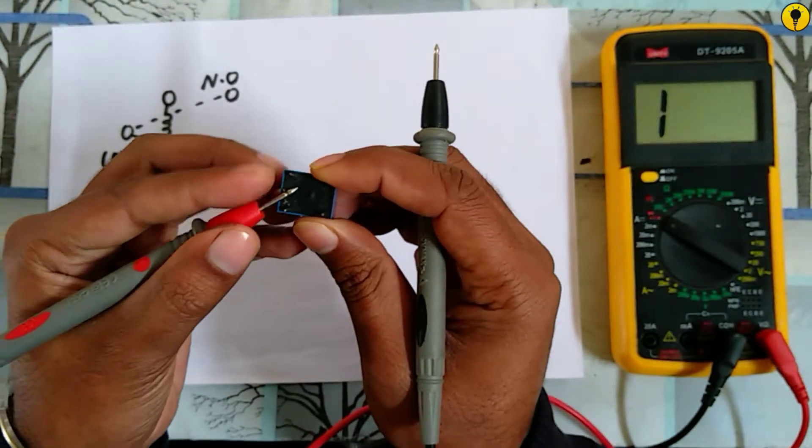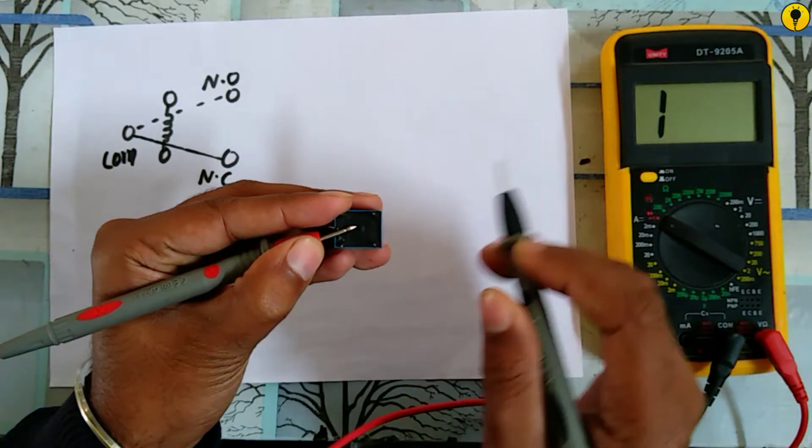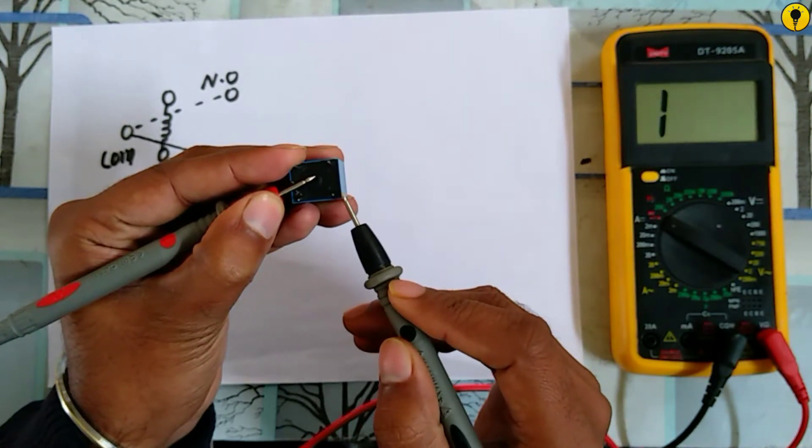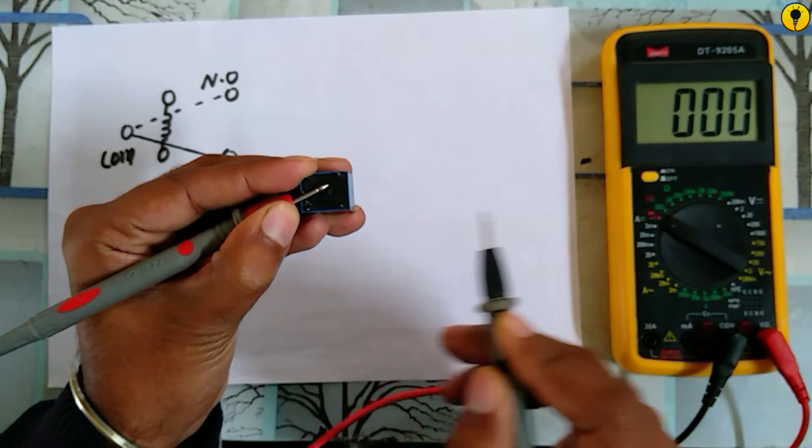The upper terminal shows nothing, but the lower terminal shows a beep sound or continuity. This means that this relay is in good condition.